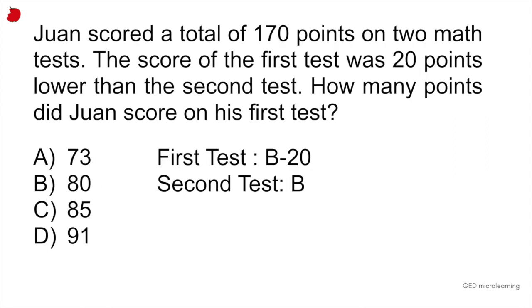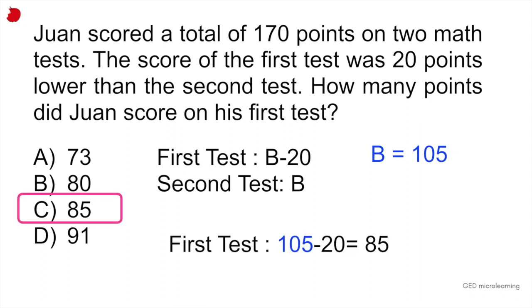But remember, we said that B was equivalent to the second test. So B is 105, the equivalent to the second test. And in the question, it tells us how many points did Juan score on his first test. So we would take that value for B and subtract 20, gives us 85. So the correct answer is C.